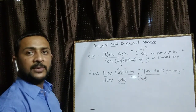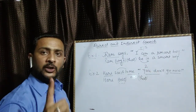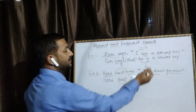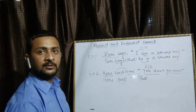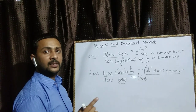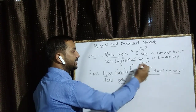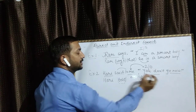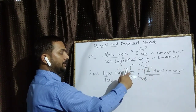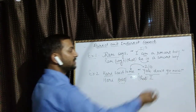अब 'you' change करते हैं — you is the second person। Second person में only one subject होता है: you। Second person change होता है according to object। Object हम देख रहे हैं — 'me' दिया गया है। Me को subject की side ले जाते हैं और me का subject form लिखेंगे: 'I'।